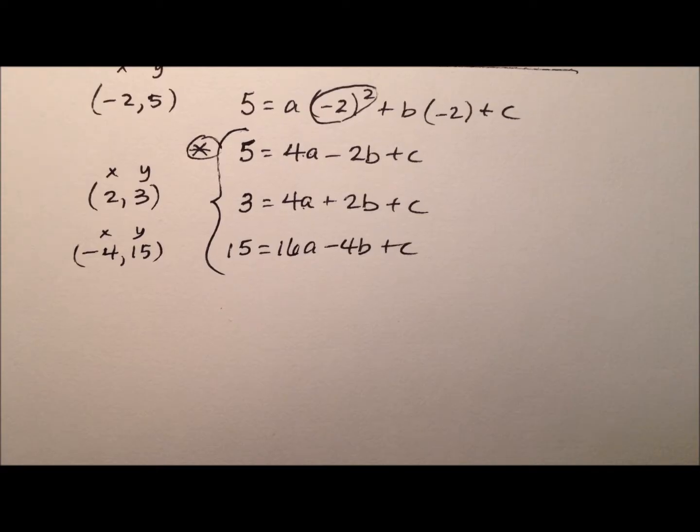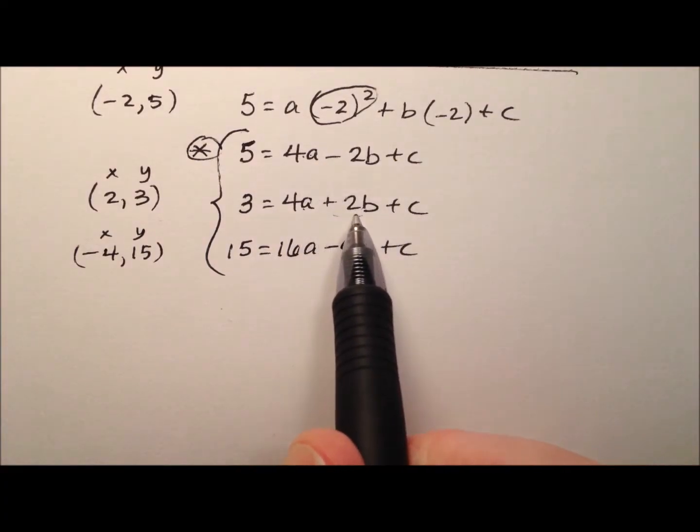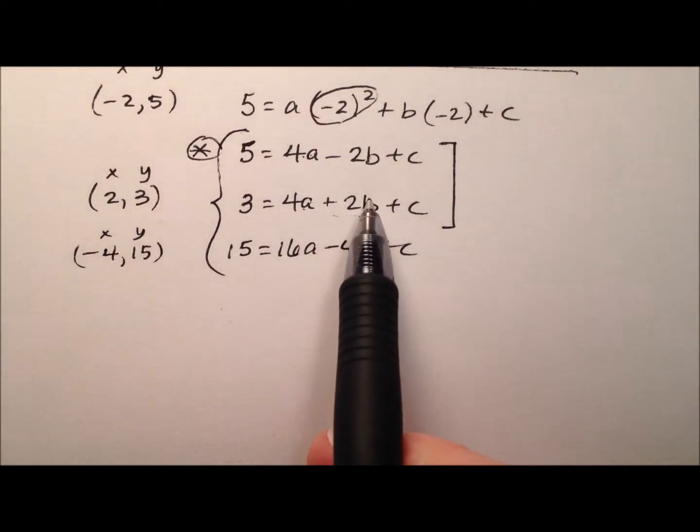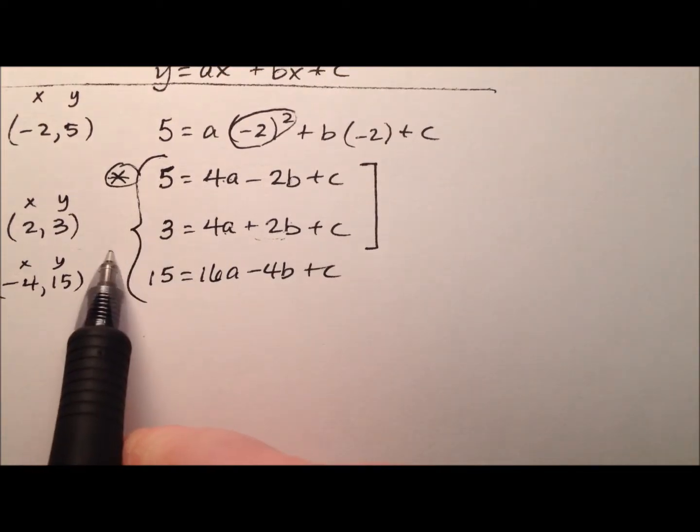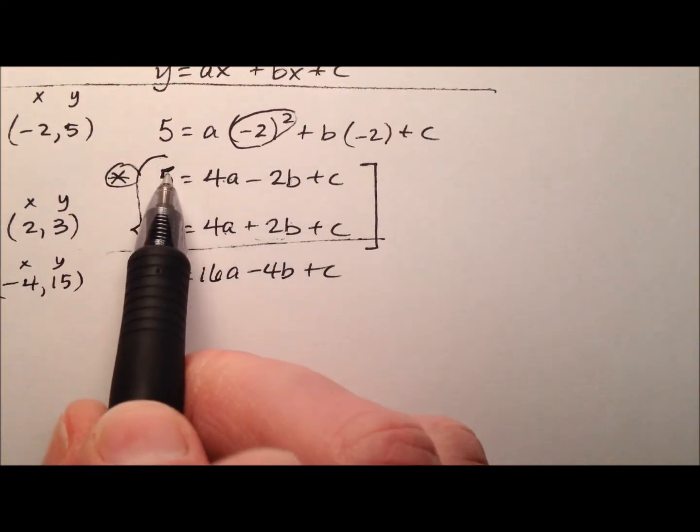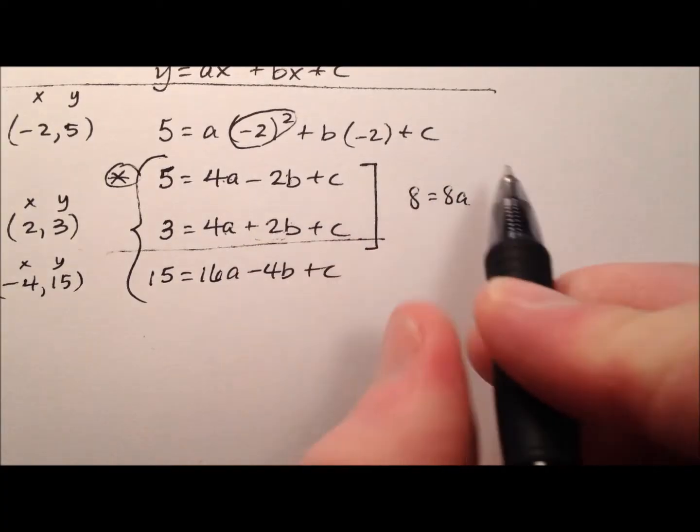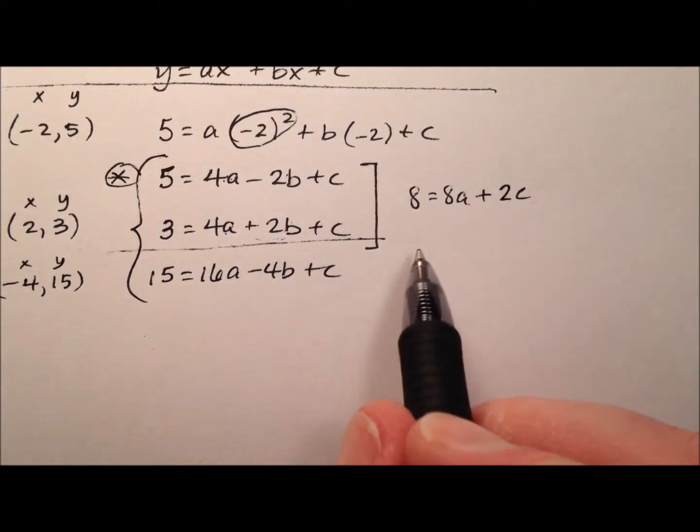We can approach this using substitution or elimination, but I notice with my b values right here, if I were just to add these two equations together, it would eliminate the b's, and that would be a really good start. So I'm just going to add these first two equations together. So 5 plus 3 is 8, 4a and 4a makes 8a, the b's cancel, and then I have plus 2c.